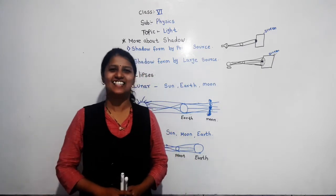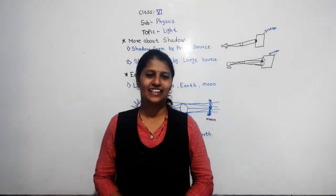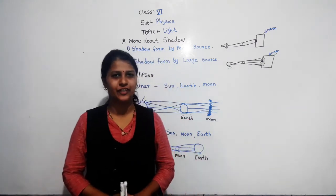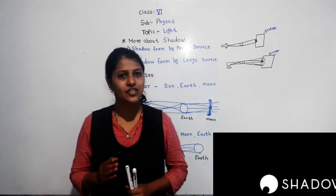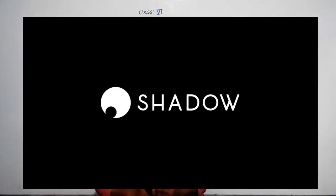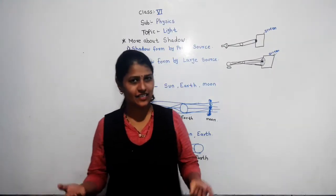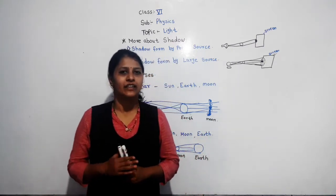Hello dear students, how are you? In the last video we started with a lesson on light, and we discussed about shadow. What is exactly the shadow? What are the conditions needed to form a shadow? What are the characteristics of the shadow?